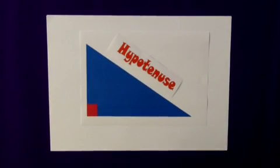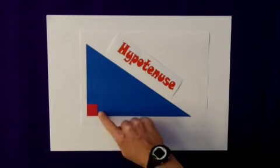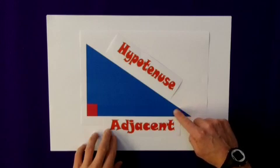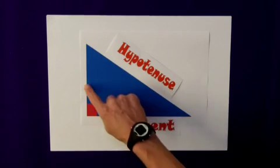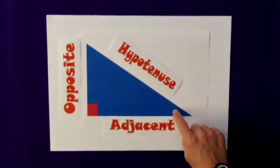And other labels, if we consider this angle here, this side is considered to be adjacent to it. And I always remember it actually touches that angle, the adjacent side. So the opposite side is just that. It is opposite that angle.